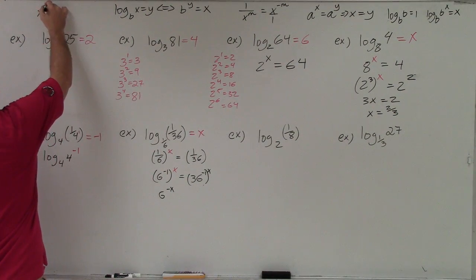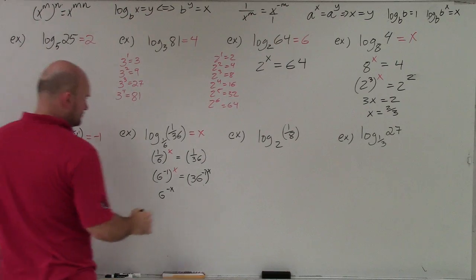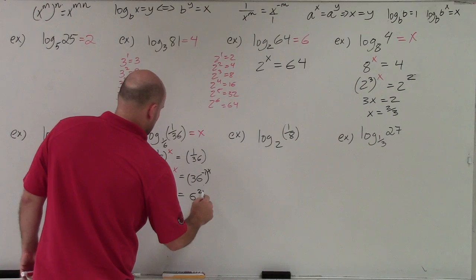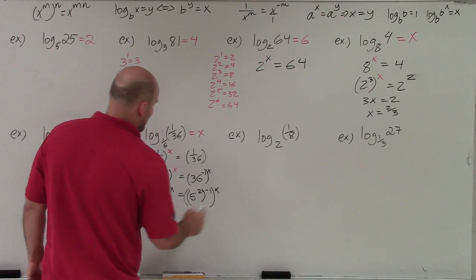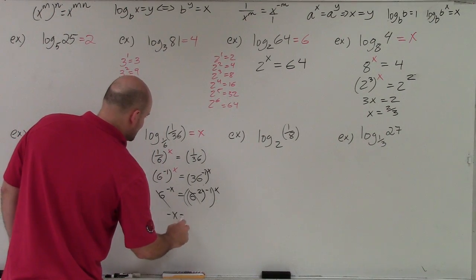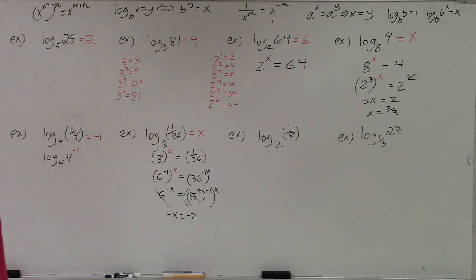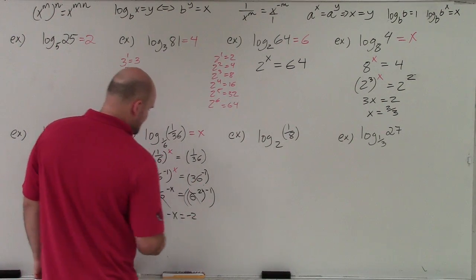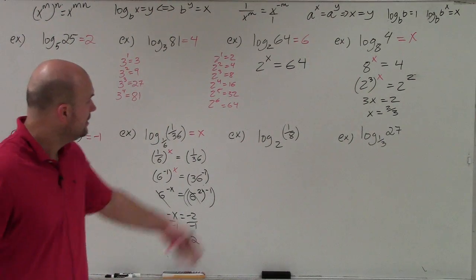So I get 6 to the negative x when I apply the power rule. Remember, the power rule states if you have an exponent raised to another exponent, you multiply them. 36 I can rewrite as 6 squared times negative 1, which is raised to the x. Again, you're just going to multiply these. The 6's divide out using that 1 to 1 property. So I have negative x equals negative 2. Divide by negative 1, divide by negative 1, x equals 2.